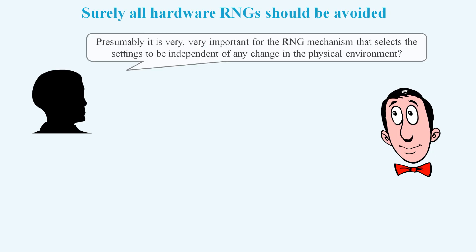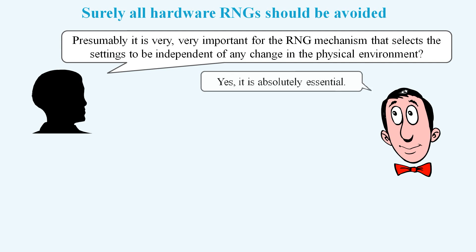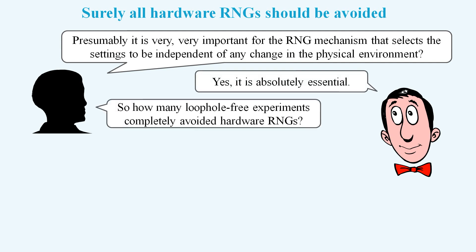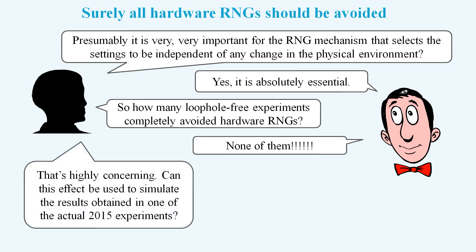Given this type of problem, you might think it's very important to avoid the use of hardware random number generators. And you would be correct. As it is so important to avoid these, how many loophole-free experiments do avoid them? None of them. This might be a bit concerning, but surely we can't use it to match the results of an actual experiment, can we?